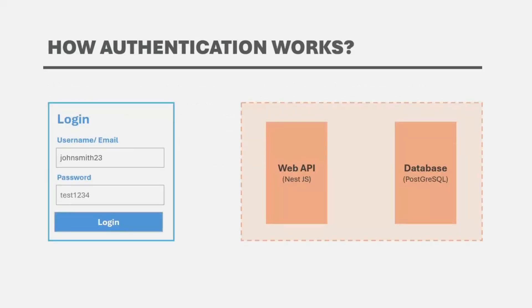In the context of a web application or a web API, authentication is done using a login mechanism. During the login process, the user has to provide his username or email and password. Each user is going to have a unique username and unique email, so this username or email will act as an identification for the user. The system also needs to verify this claim — let's say I'm trying to login as JohnSmith23. The system will check if there is already a user in the database with this username.